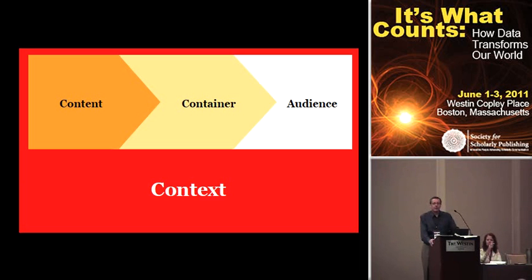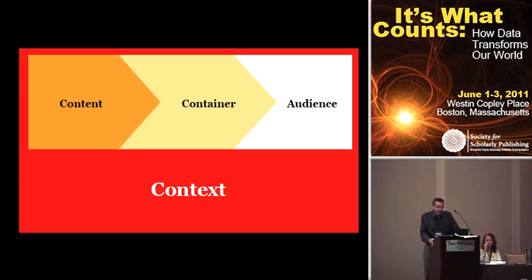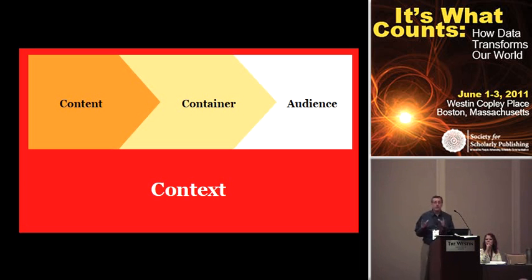The textbook publisher D.C. Heath used to be a subsidiary of the high-tech company Raytheon, and the president of Raytheon once remarked — standing right about where that screen is in this room — that D.C. Heath was their only subsidiary that wasn't technologically based. What he meant was that customers choose one radar system over another because of its physical properties — its workmanship, the materials, the performance characteristics.